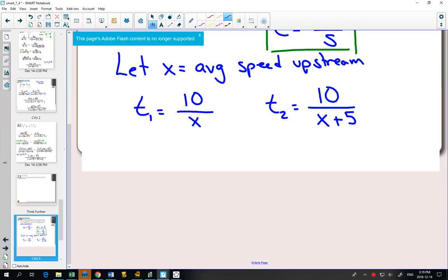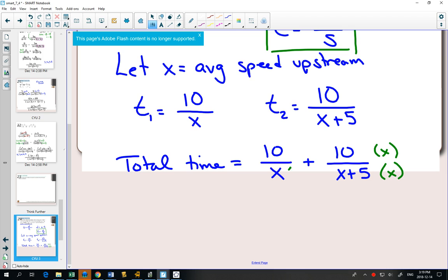We need to write an expression for the total time. The total time would be the first one plus the second one. If we wanted to simplify this, we would need to add these and get a common denominator.